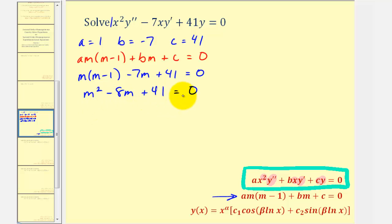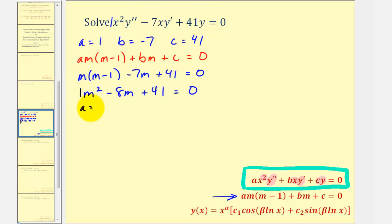Unfortunately, this is not factorable since there are no factors of positive forty-one that add to negative eight, which means we'll have to use the quadratic formula. Using the quadratic formula, note that a is one, b is negative eight, and c is positive forty-one.